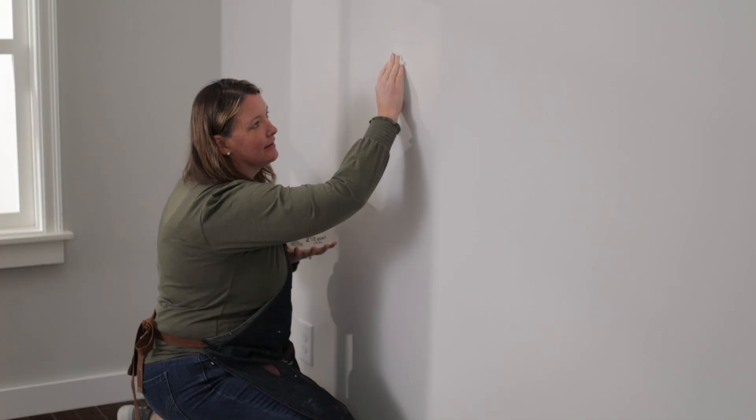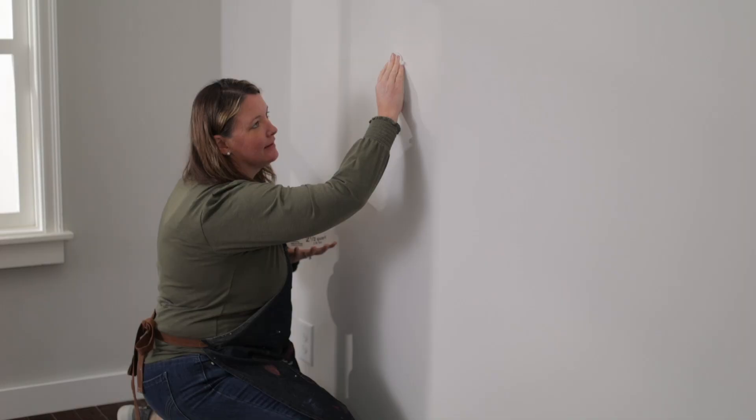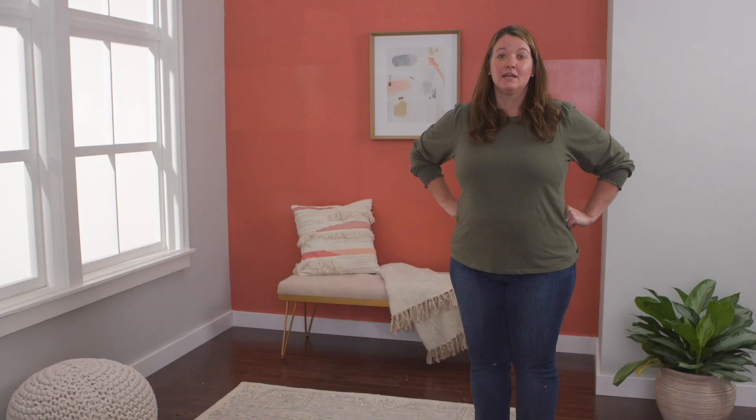Using some soap and water, clean your walls and once you have it cleaned, wipe it down with a dry cloth. Step three, remove any outlet covers.